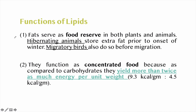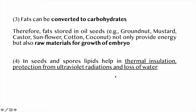Functions of lipids: fats serve as a food reserve — hibernating animals store extra fat prior to winter, and migratory animals do the same before migration. Fats also function as concentrated food because they yield more than twice as much energy per unit weight compared to carbohydrates. Fats can be converted to carbohydrates, so fats stored in oil seeds like groundnut and mustard not only provide energy but also provide raw material for embryo growth. In seeds and spores, lipids help in thermal insulation, protection from UV radiation, and prevention of water loss.